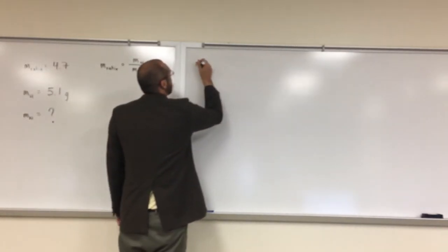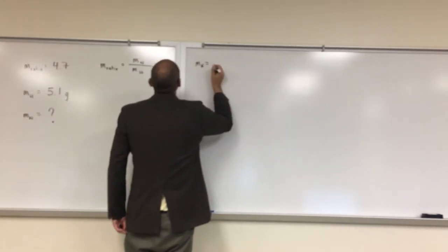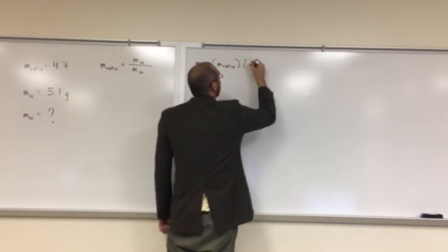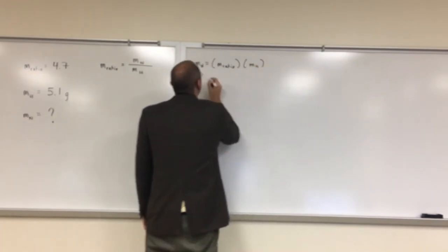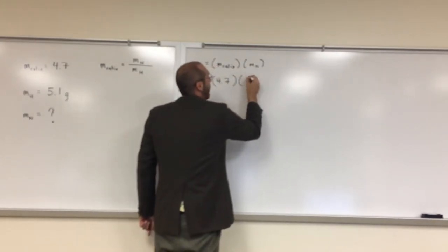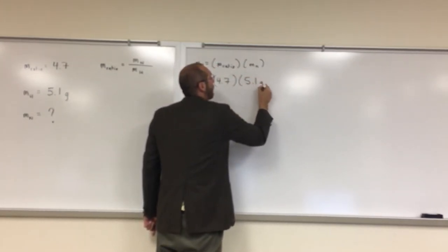So let's go ahead and do that. The mass of nitrogen is going to equal the mass ratio times the mass of hydrogen. So the mass ratio in this problem is 4.7. We're going to multiply that by 5.1 grams.